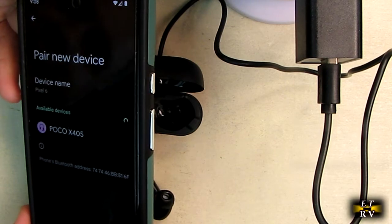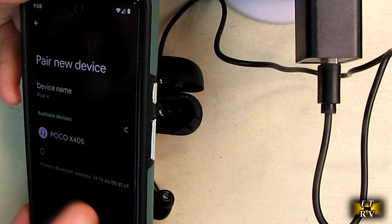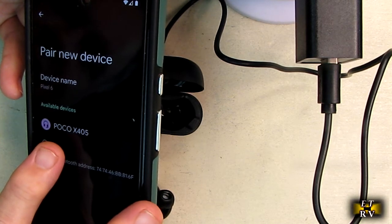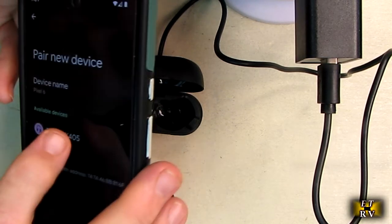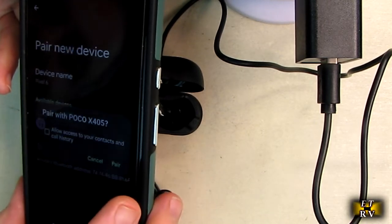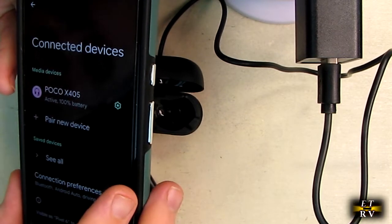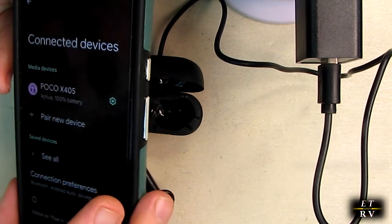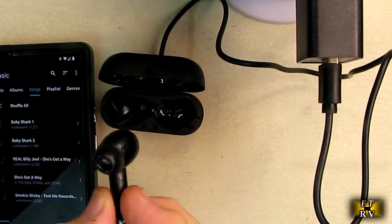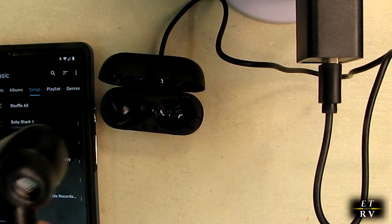I have my Pixel 6 right here. I said pair new device and it picked up POCOX405. I'm going to assume that's this device, so let's pair to it. It says active, 100% battery, so it's giving me battery information. That worked—I can hear music in here. Let me put it by the microphone.